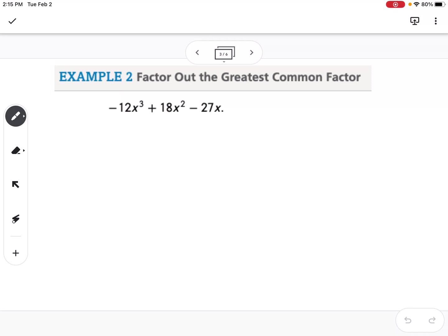For the second one, we're going to factor out the greatest common factor. So one tip is that if we have a negative for the first term, we're going to want to factor out that negative, and we'll talk about that once we get to the end part.